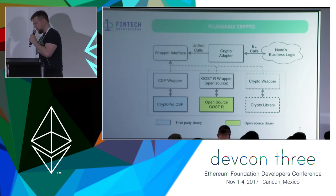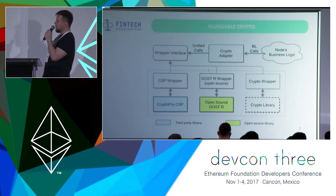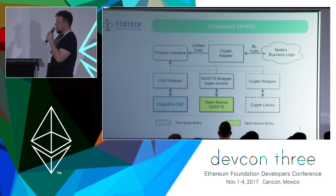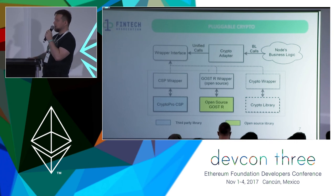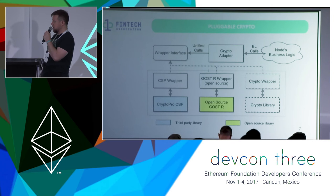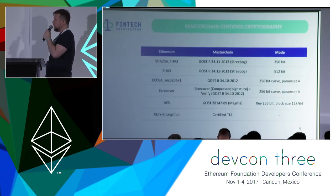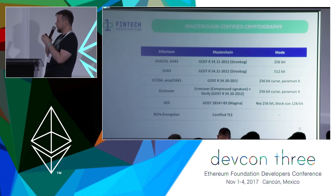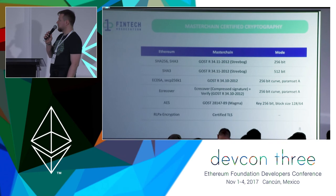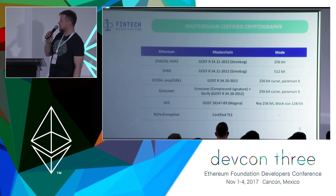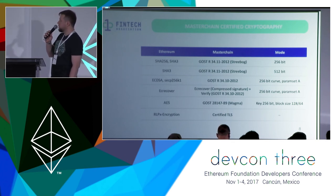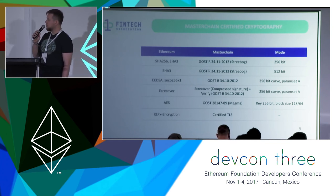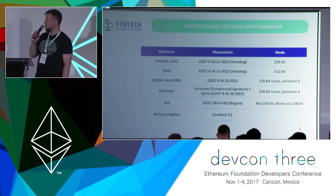You can implement your own crypto wrapper to wrap your own crypto library. In fact, you can do a mixed mode using NIST cryptography or GOST cryptography in the same way. What exactly did we switch from Ethereum to MasterChain? Three types of hashes — SHA-256 and SHA-3 in both 256-bit and 512-bit modes — were switched to Streebog.